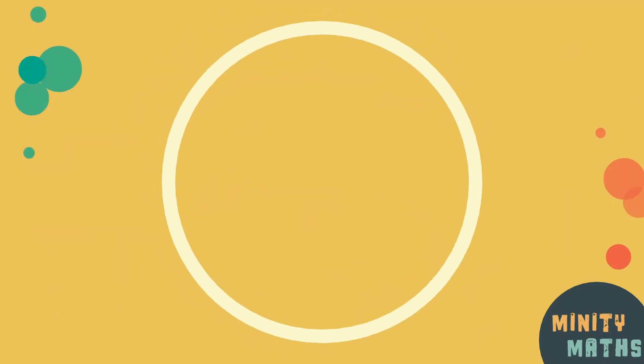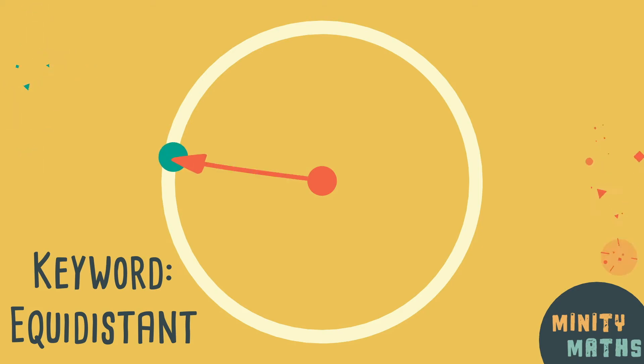How can we describe a circle in mathematical terms? Well, a circle is made up of points which are all equidistant from its centre point, meaning an equal distance from its centre.